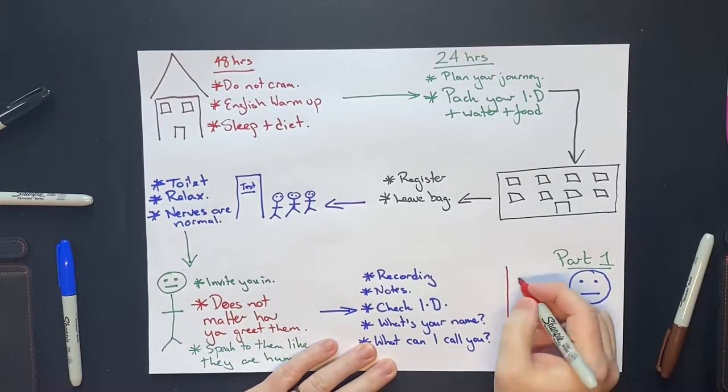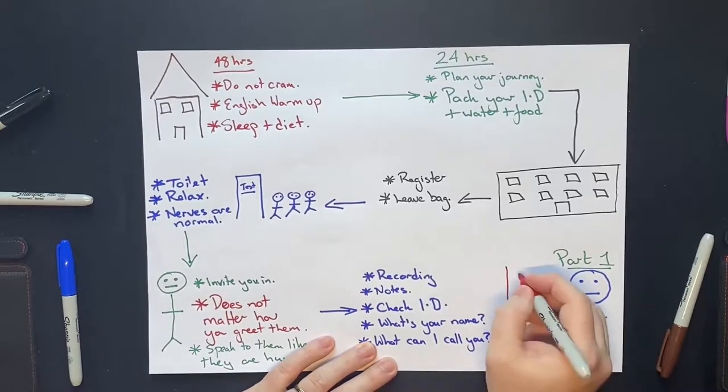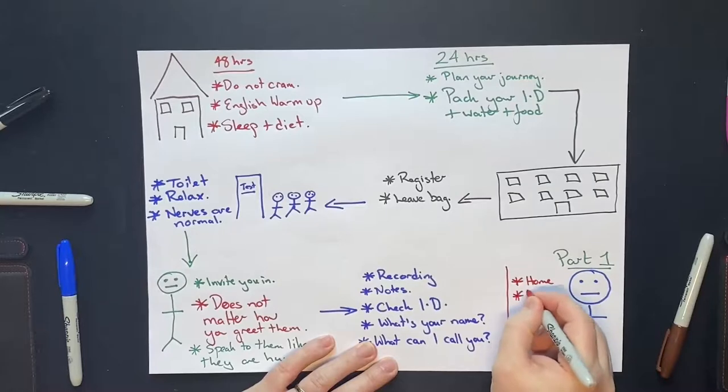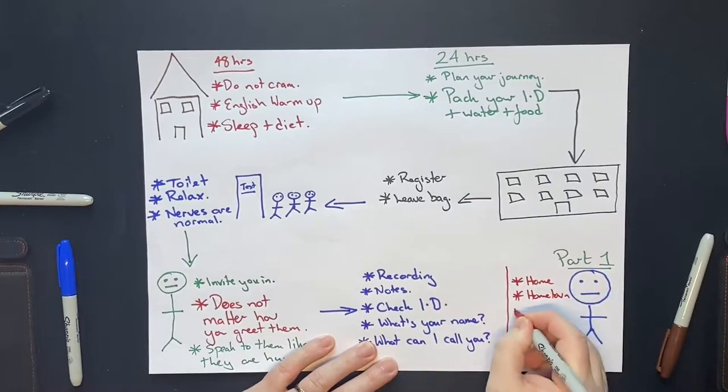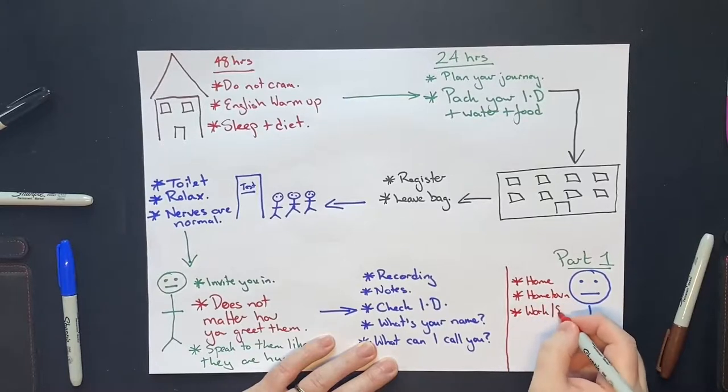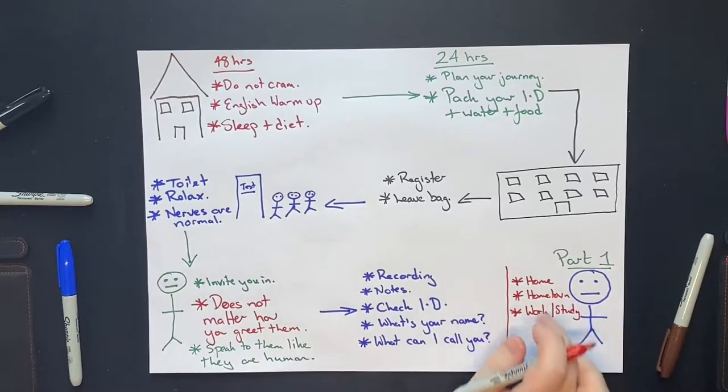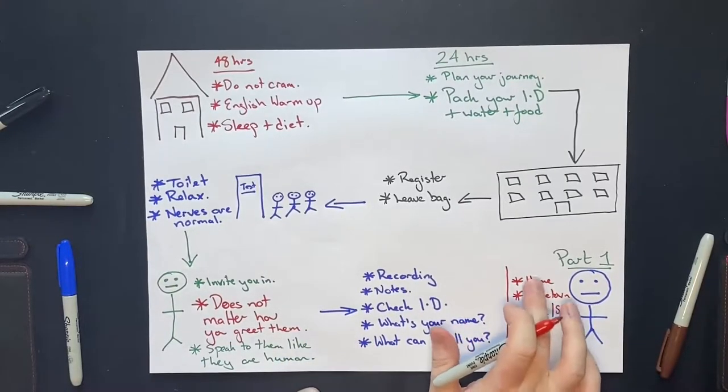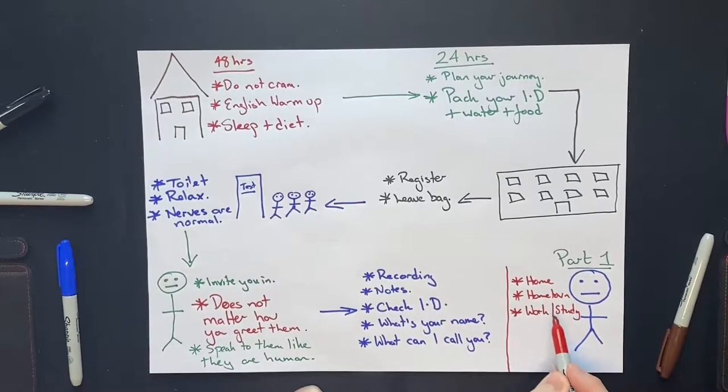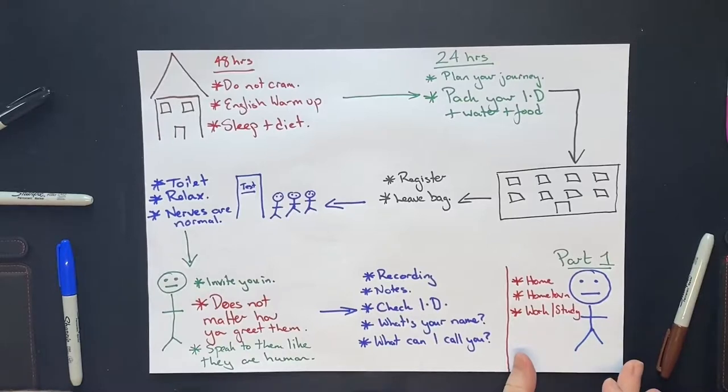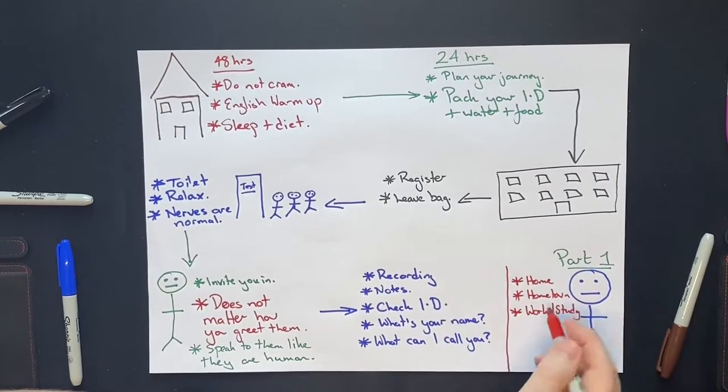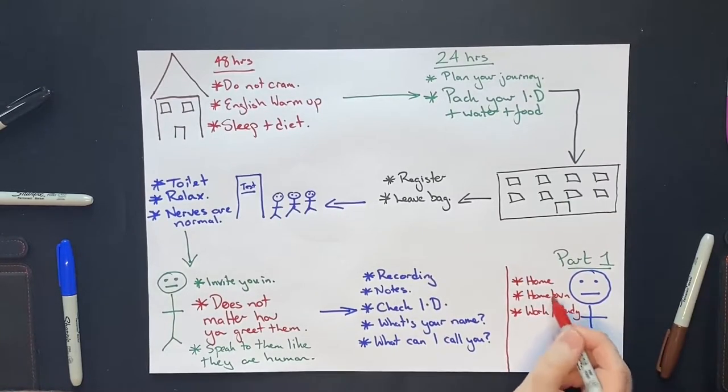Then part one will begin. And they will ask you about some common topics. So home, hometown, work, or study. A very common mistake that many students make is because they're anticipating these topics, they will memorize answers for these topics. Do not do this. If you do this, what you will do is you will indicate to the examiner that you don't know how to speak English. Because memorization and communication are two very, very different things. And you're basically giving the examiner the first impression that you were trying to cheat the test.